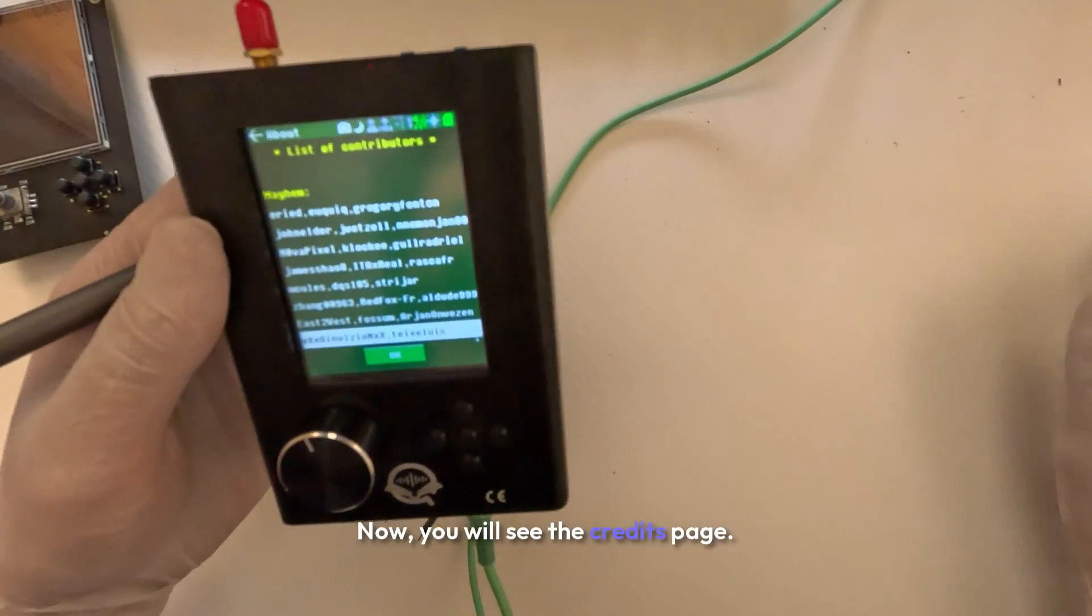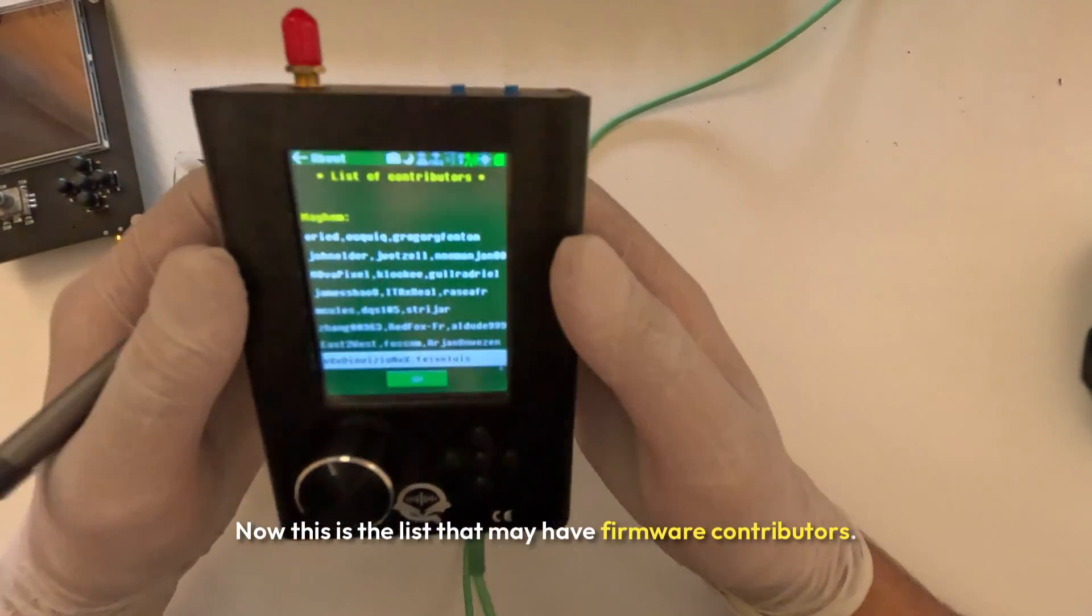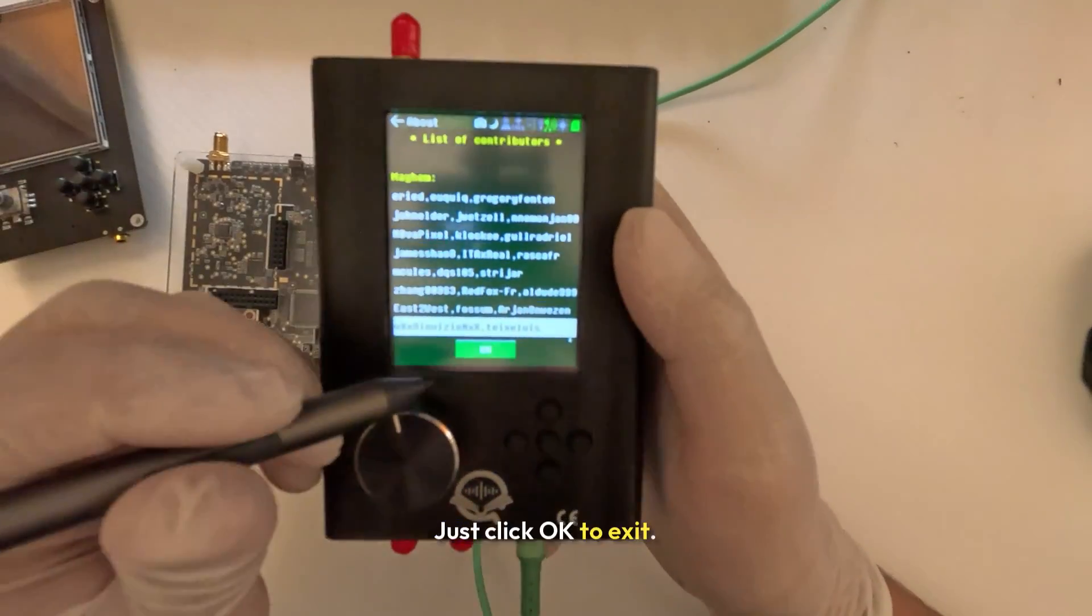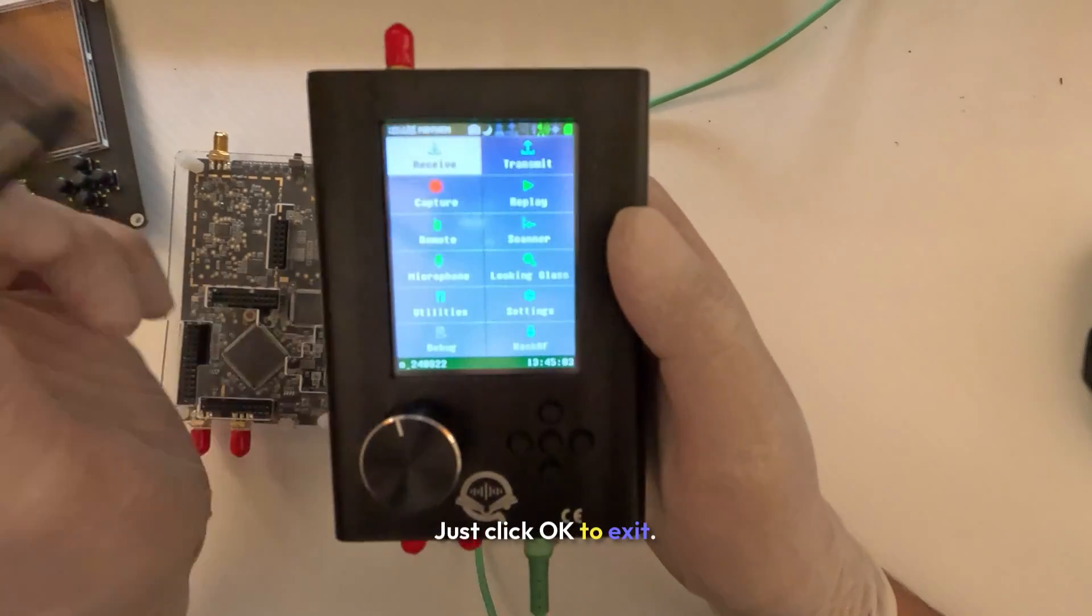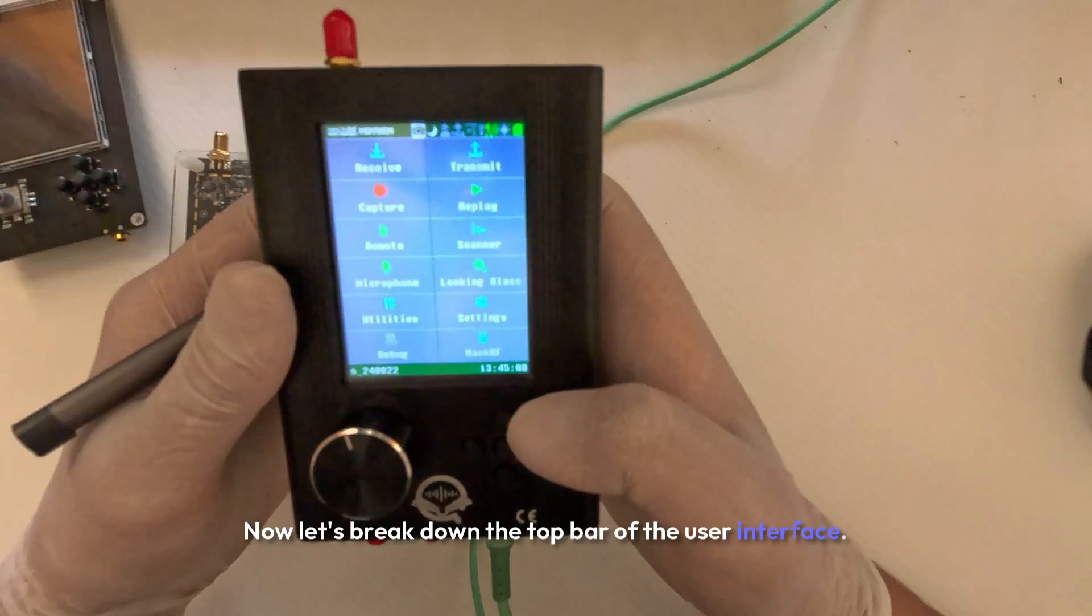You will see the credits page first. This is the list of Mayhem firmware contributors. Just click OK to exit. Now let's break down the top bar of the user interface.